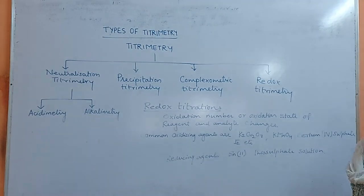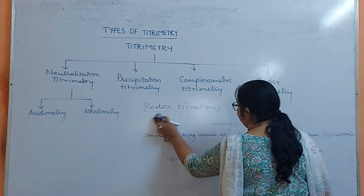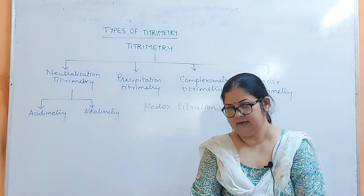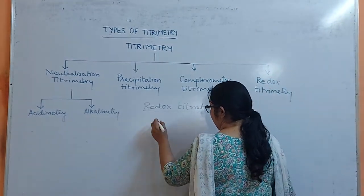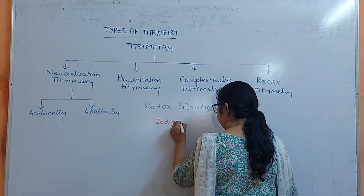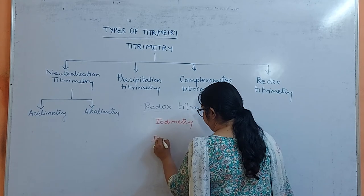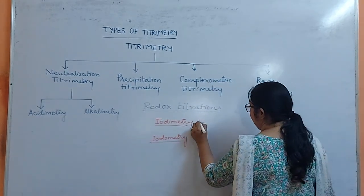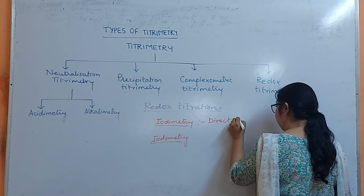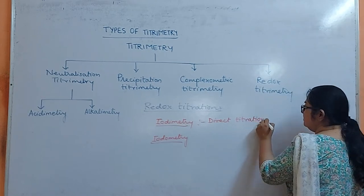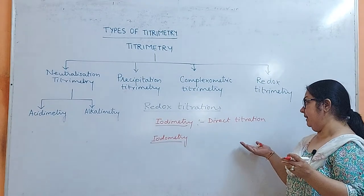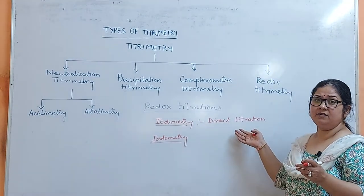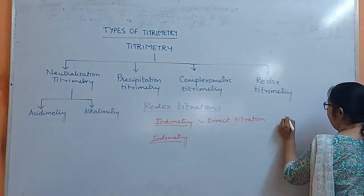Redox titration using iodine can be classified into two types: iodimetry and iodometry. Iodimetry is called direct titration. In direct titration, you fill your burette with the iodine solution, take your analyte, and using an indicator you directly titrate the solution with iodine. Here the formation of iodide ion takes place.